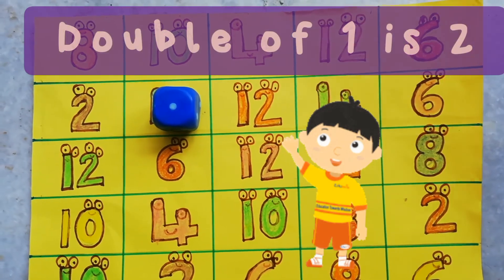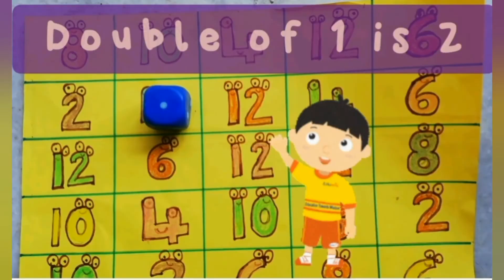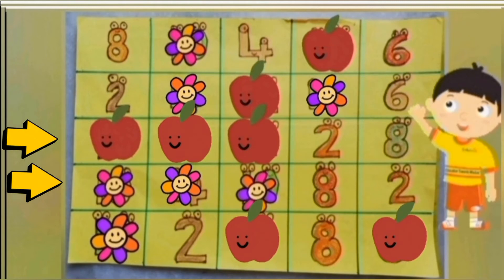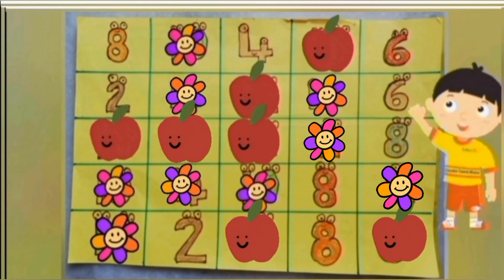It's one. Double of one is two. As other rows are marked by both of us, only two rows are left. I shall mark the twos in these rows.